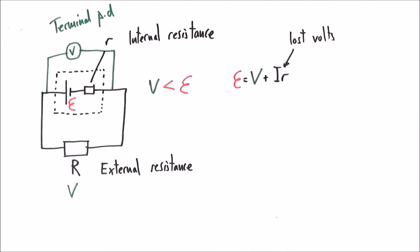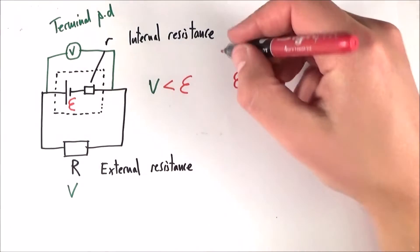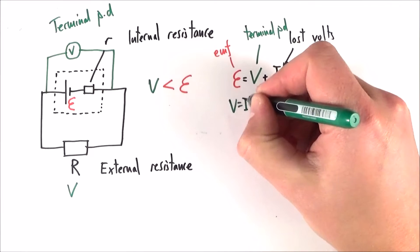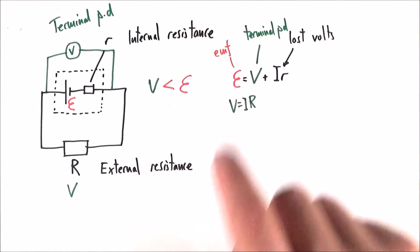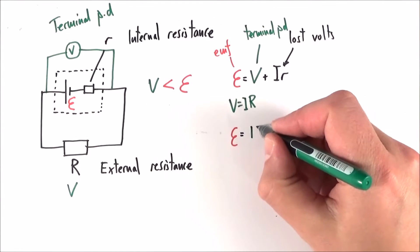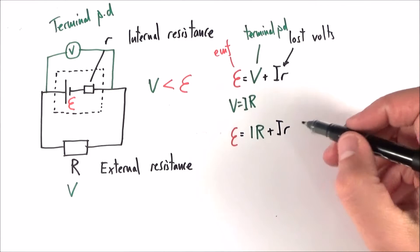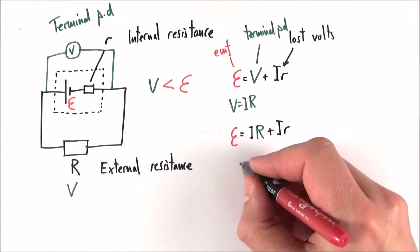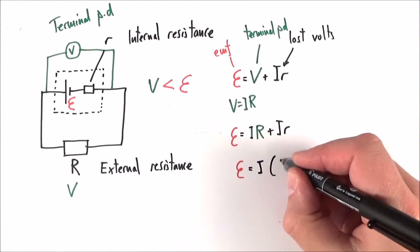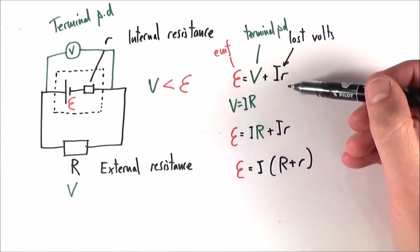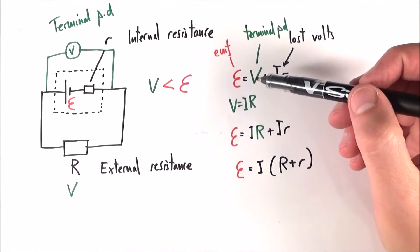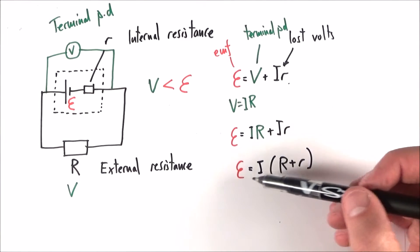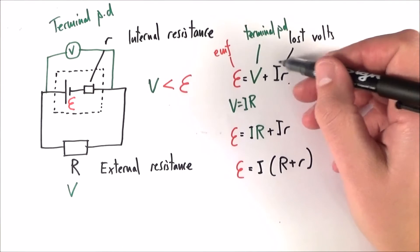These lost volts are not useful in the circuit. We also have the terminal potential difference, and E stands for the electromotive force. We know that V is equal to I times R, so we can also write the equation as E equals IR plus Ir, where little r is the internal resistance. Because we have a common factor of I, we can rewrite this as EMF equals I multiplied by (R + r). So we have two forms: EMF equals terminal PD plus the lost volts, and E equals I(R + r).